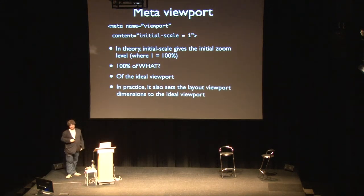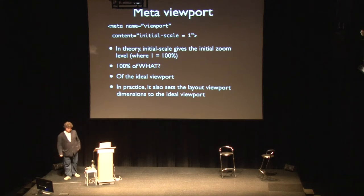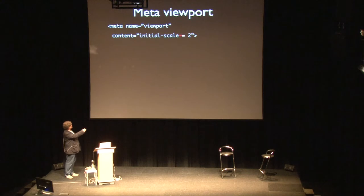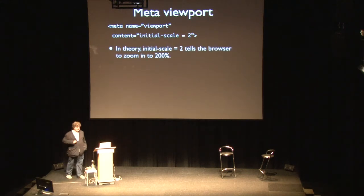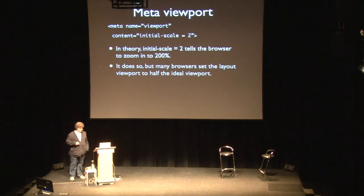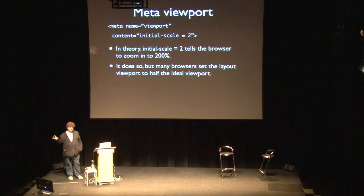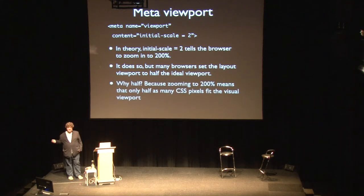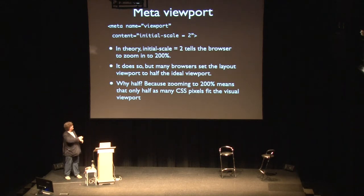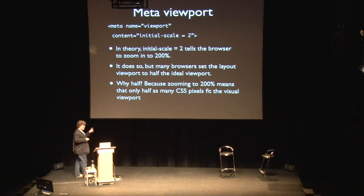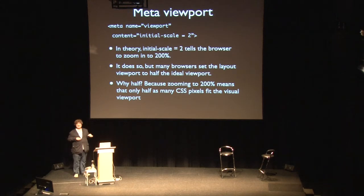It gets even weirder when you change the value — for example, initial-scale=2. In theory that means zoom to 200% of the ideal viewport, and that actually happens. But many browsers also set the layout viewport to half the ideal viewport. Why half? Because zooming means CSS pixels stretch out and fewer of them fit on screen. So on an iPhone, this gives a layout viewport of not 320 but 160. One exception: Android WebKit obeys only the value 1 and not any other values — I have no idea why.